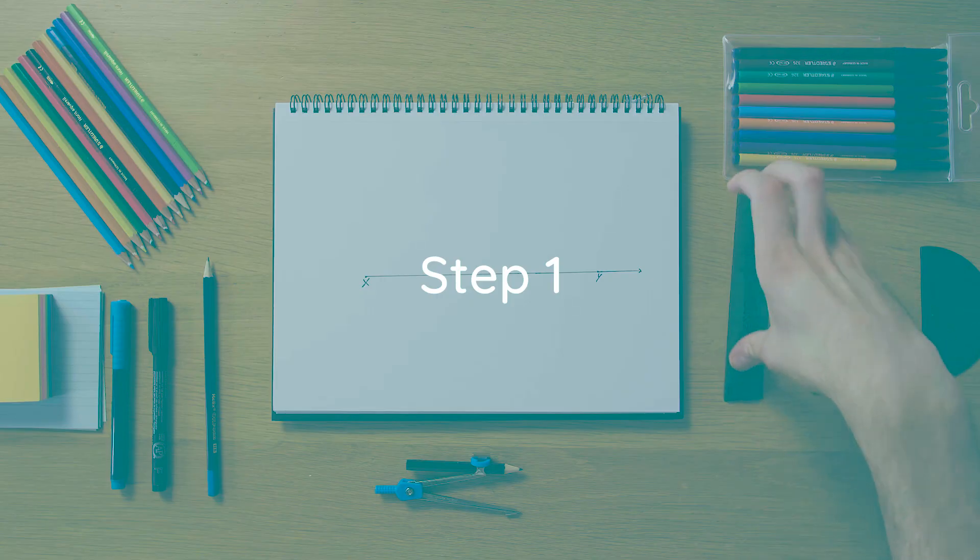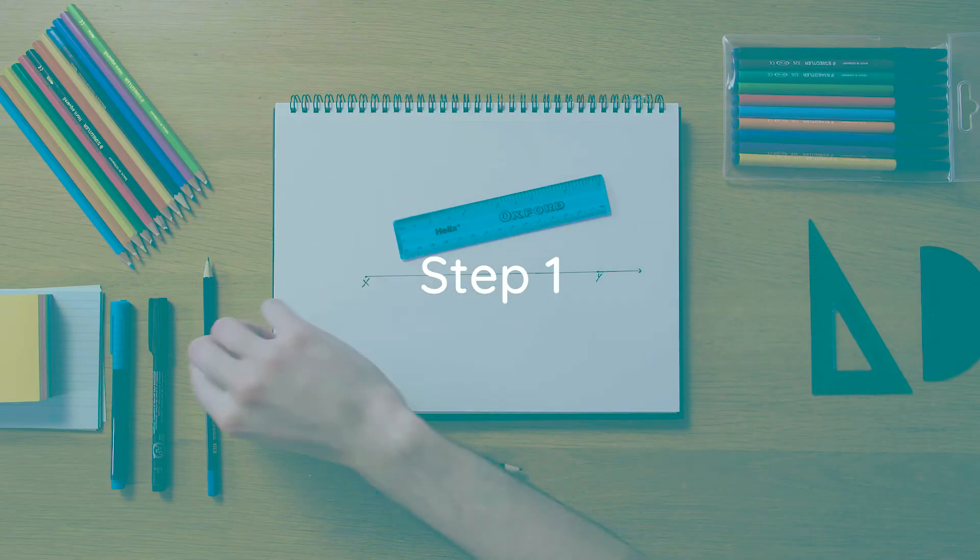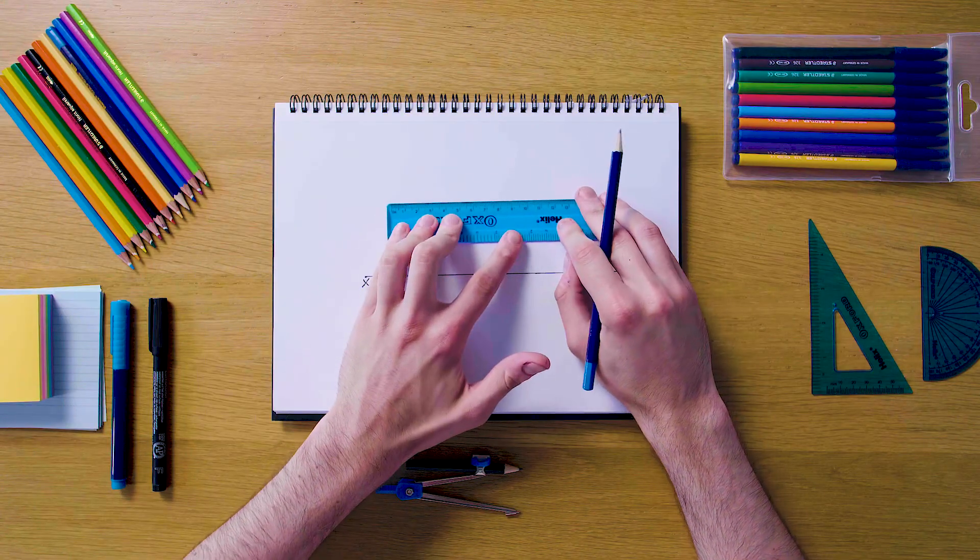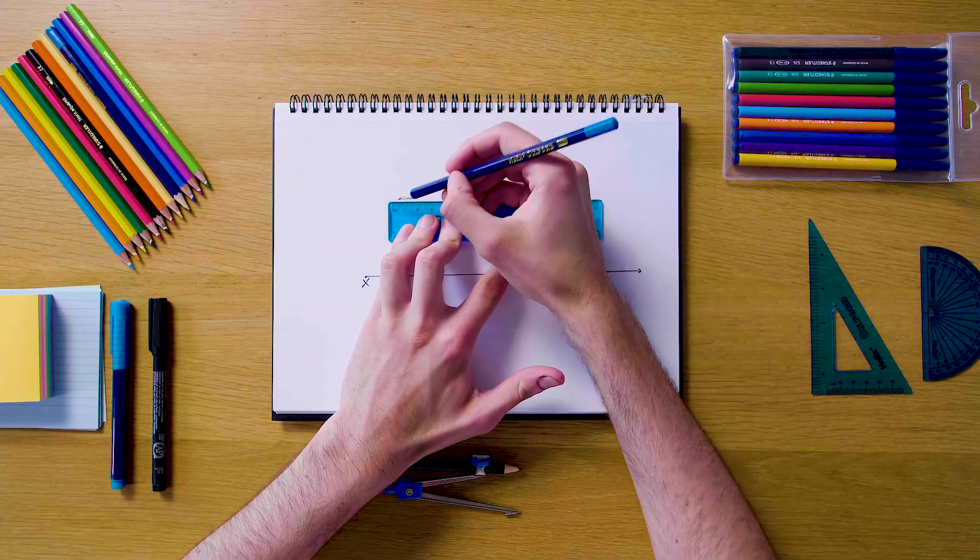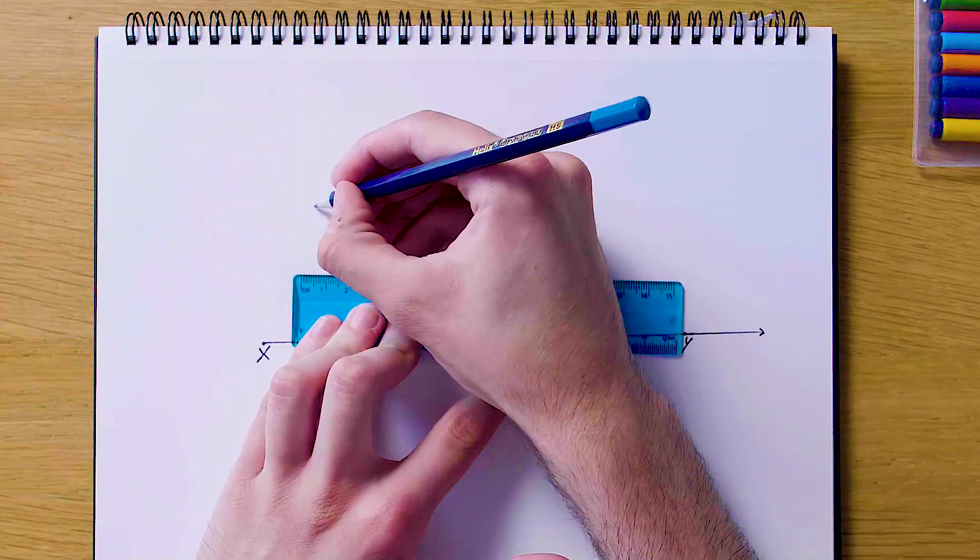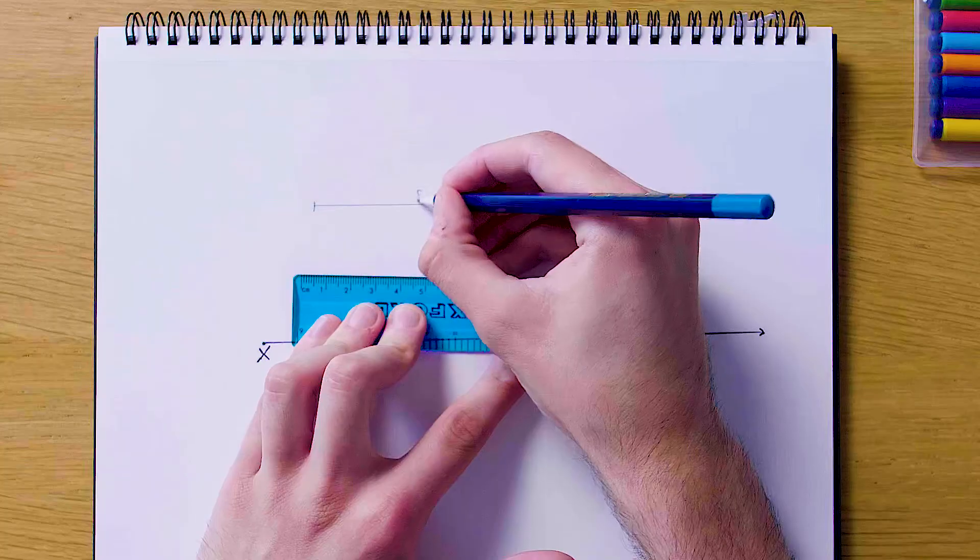Okay, so the first step of this construction is going to be to measure out our length somewhere on the page. In this case we're going to do 8 centimeters, so we're just going to draw a line of 8 centimeters of length up here. And so we have point to point here and that is 8 centimeters long.